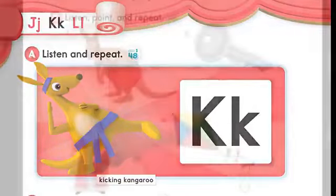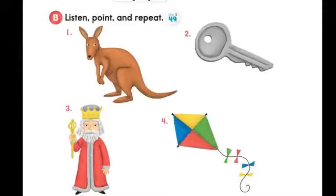Page 34. B. Listen, point, and repeat. One: kangaroo, kangaroo. Two: key, key. Three: king, king. Four: kite, kite.